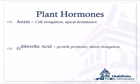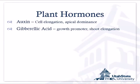Another hormone is gibberellic acid, or gibberellin, which is a growth promoter involved in cell division and shoot elongation. Gibberellic acid was originally discovered because a fungus attacked rice, causing it to grow really, really tall before dying. They discovered that what was making the rice grow so tall was gibberellic acid produced by this fungus, and it turned out that gibberellic acid is actually naturally occurring in the plant.